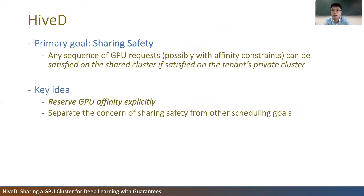HIVED is our solution to such sharing anomaly. The primary goal is to guarantee sharing safety, which is defined against the anomaly. Any sequence of GPU requests, possibly with affinity constraints, should be satisfied on the shared cluster if satisfied on the private cluster. With sharing safety, HIVED can guarantee that a tenant will never suffer from sharing, which we believe is the premise of building a shared cluster. We advocate separation of concerns. HIVED is a framework that focuses on providing sharing safety by reserving GPU affinity explicitly for tenants, so that sharing anomaly would never happen by design. With such reservation, HIVED provides a clean interface to incorporate any state-of-the-art schedulers to address other concerns.